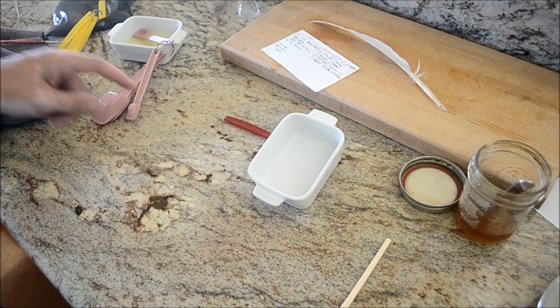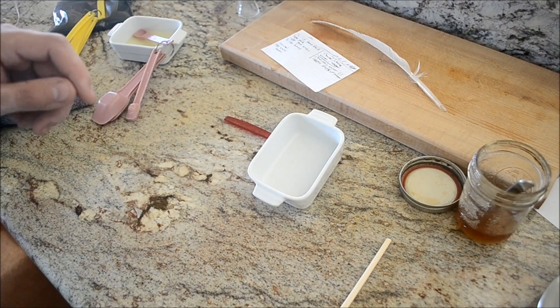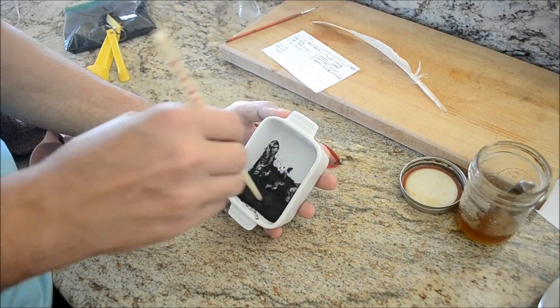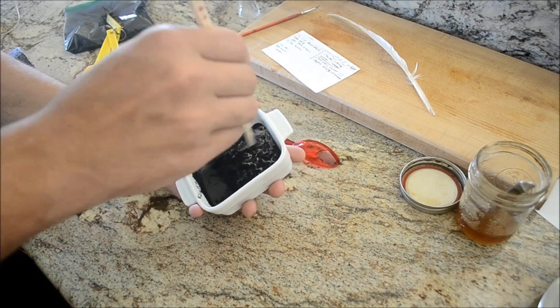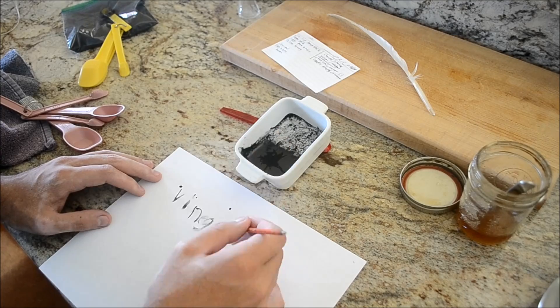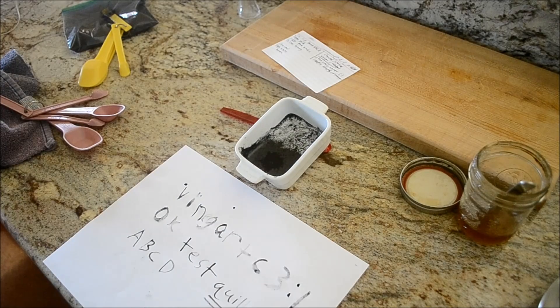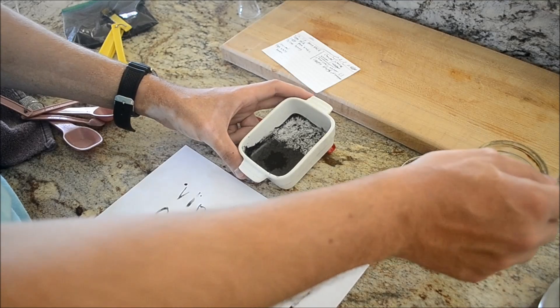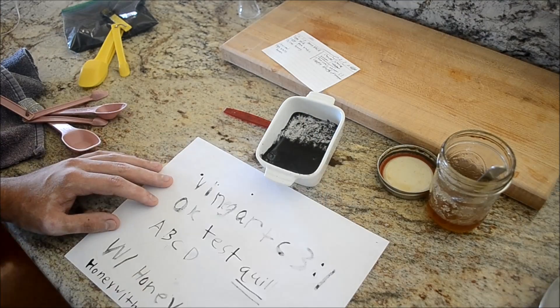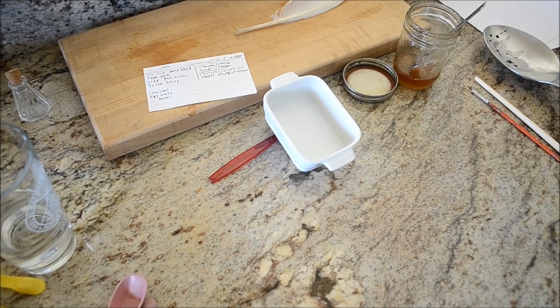Okay, for this one I'm just going to use charcoal and vinegar, about half a teaspoon of each. I'm going to add some honey to the vinegar, try and thicken it up.